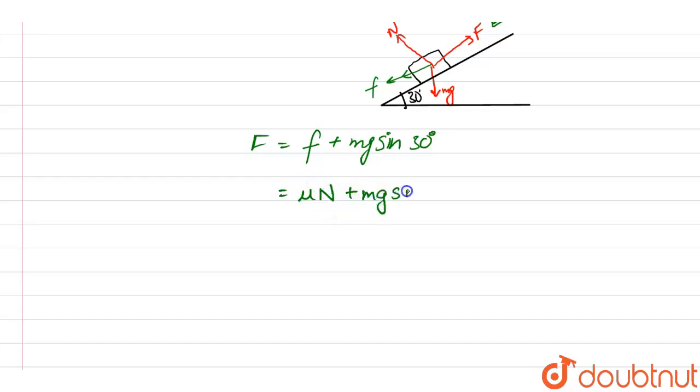Plus mg sin theta. Now the normal is equal to mg cos theta. So it comes out to be, let's take mg common, mu cos 30 plus sin 30 degrees.